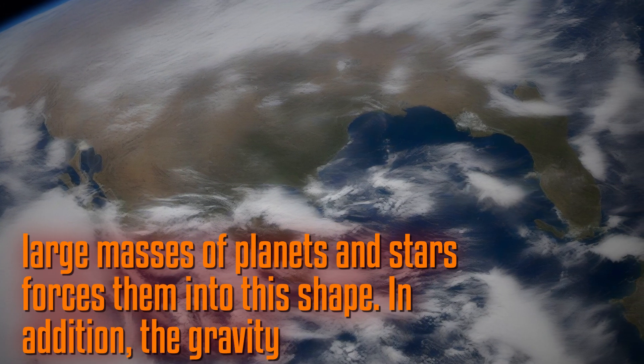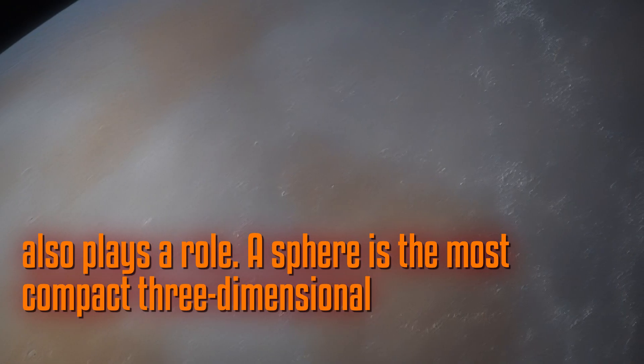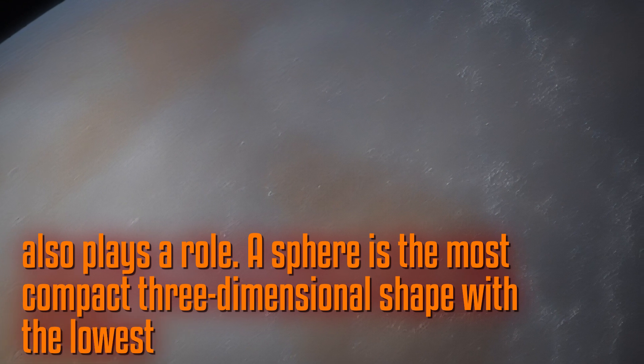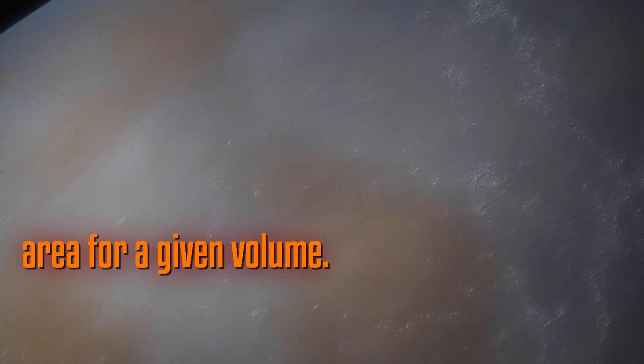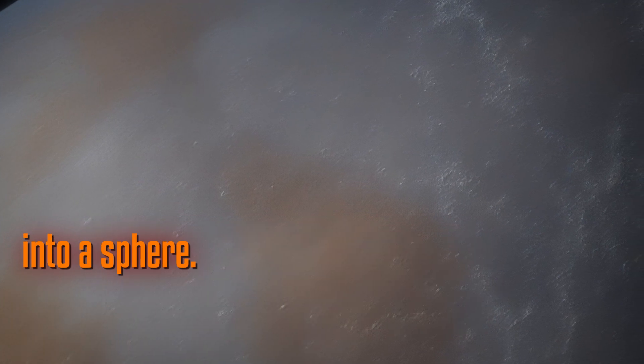In addition to gravity, geometry also plays a role. A sphere is the most compact three-dimensional shape, with the lowest surface area for a given volume. If stars and planets had any other shape, gravity would still shape them into a sphere.